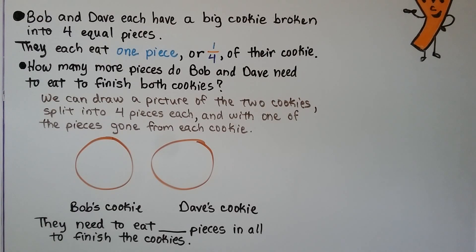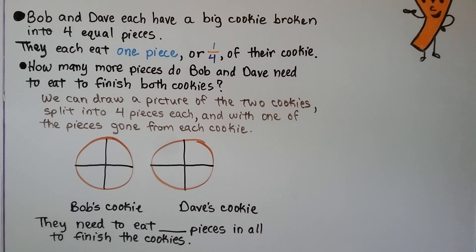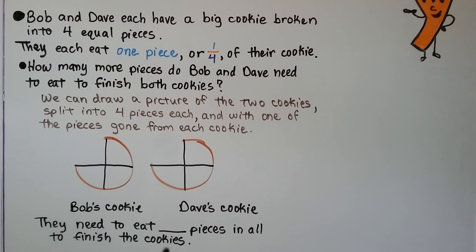Bob and Dave each have a big cookie broken into four equal pieces. They each eat one piece, or one-fourth of their cookie. How many more pieces do Bob and Dave need to eat to finish both cookies? We can draw a picture of the two cookies, splitting each into four pieces with one piece gone from each. Bob's cookie has three pieces still left, and Dave's cookie has three pieces left. That means they need to eat six pieces in all to finish the cookies.